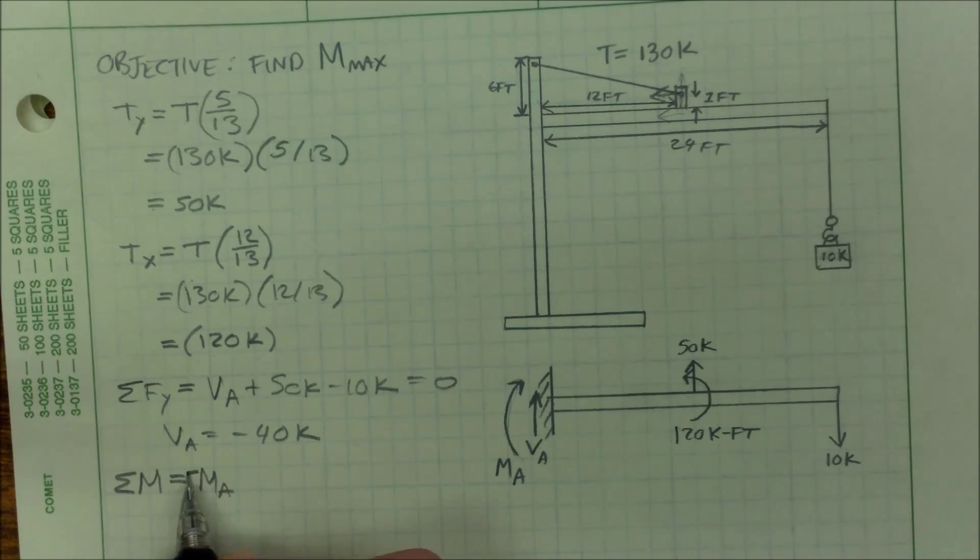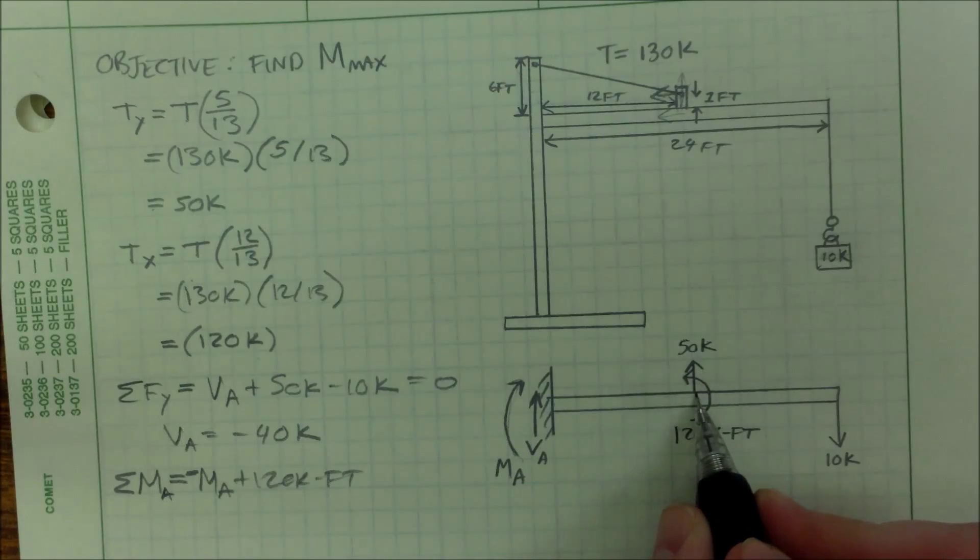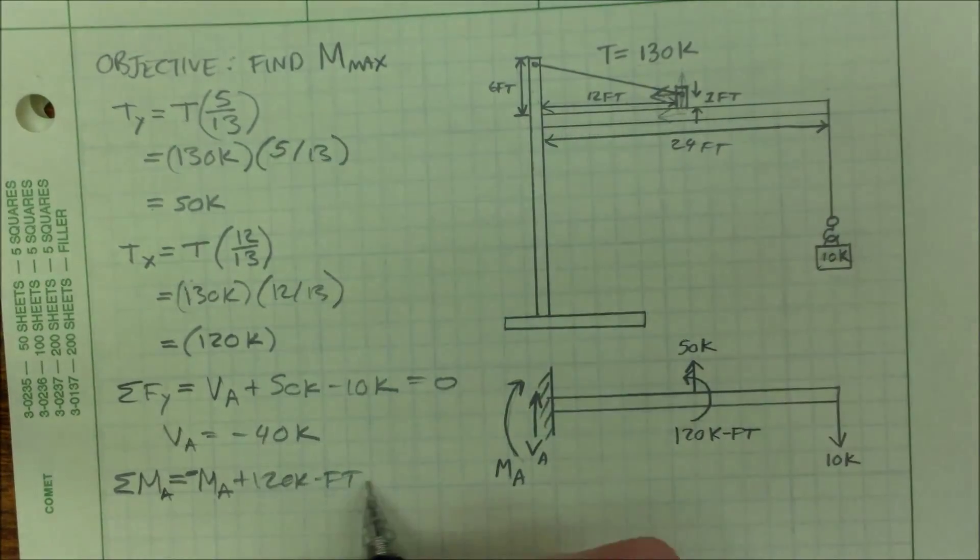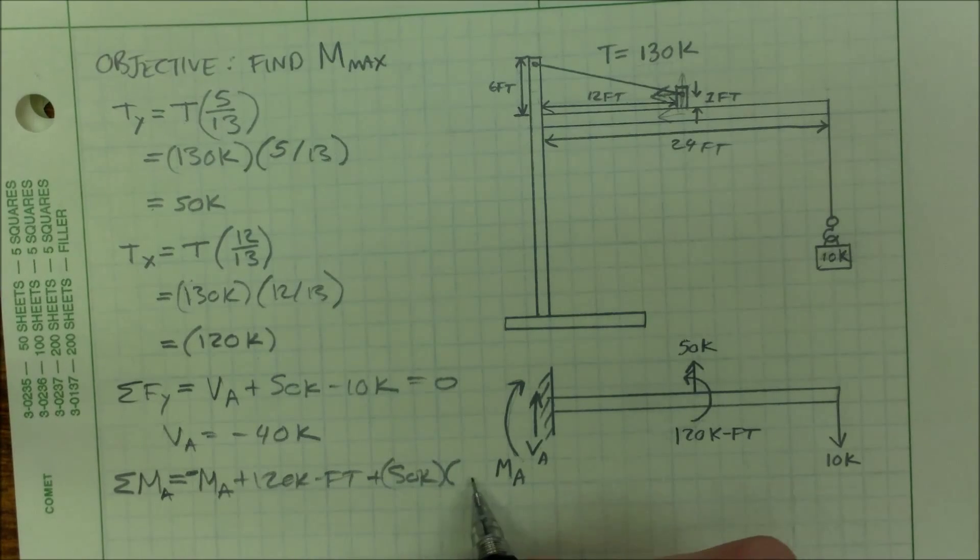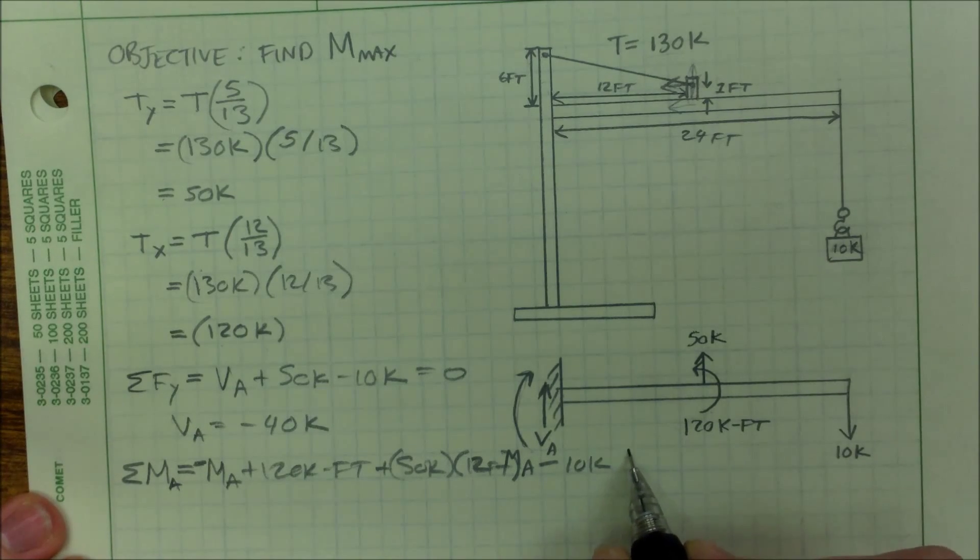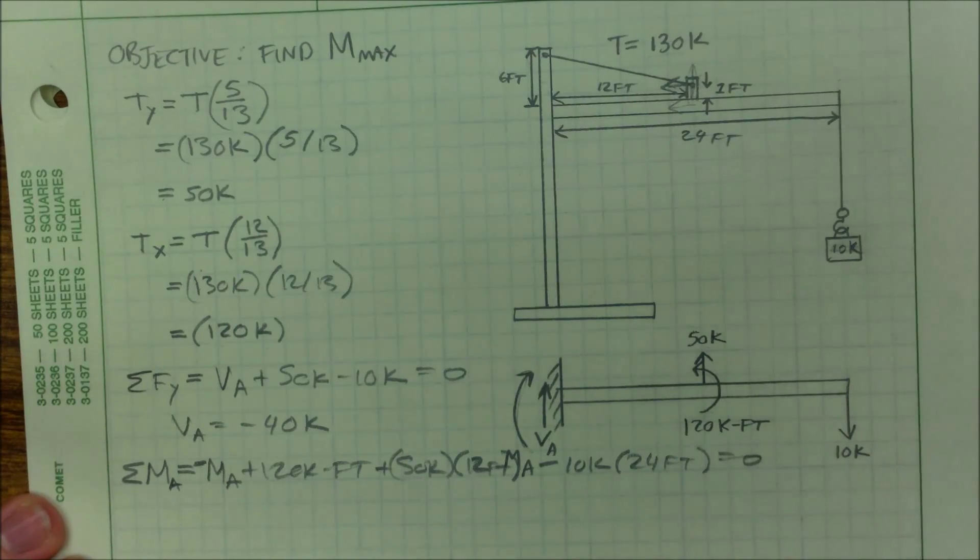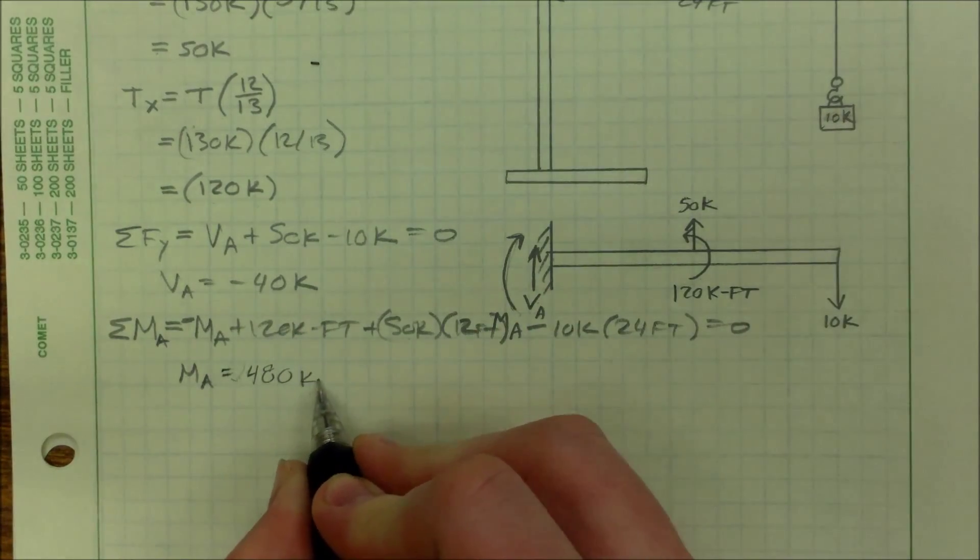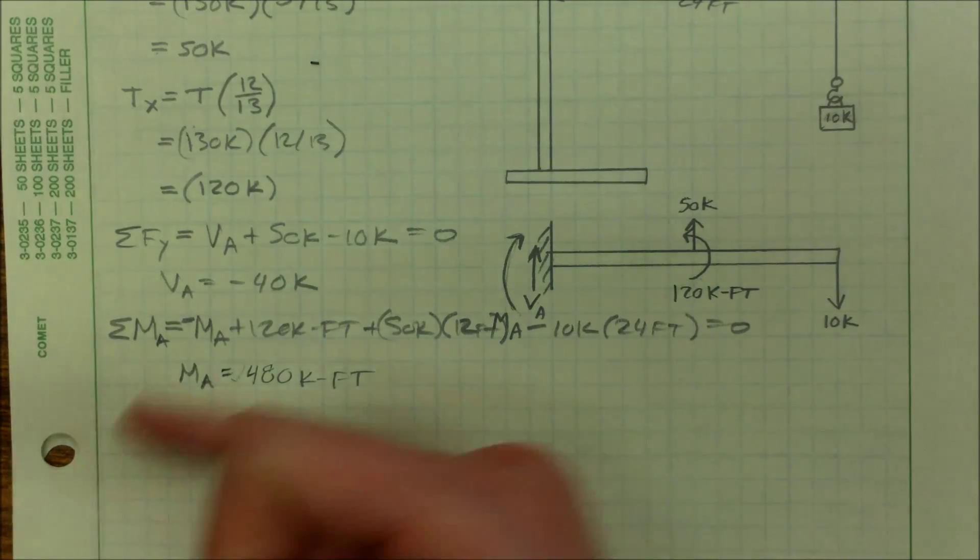We have a positive 120 kip-feet. We have this force, which is 12 feet. It's a positive moment. I can't forget my negative 10 kips times 24 feet equals 0. 480 kip-feet.